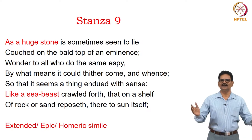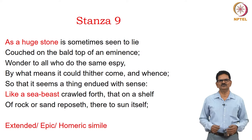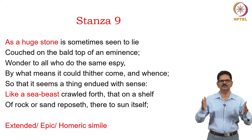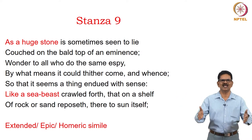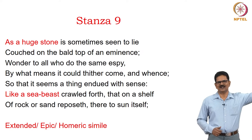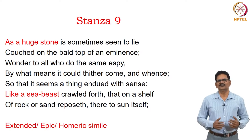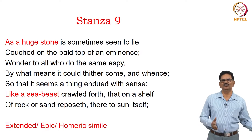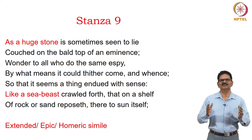Stanza nine presents an epic (extended/Homeric) simile describing the old man: 'As a huge stone is sometimes seen to lie, / Couched on the bald top of an eminence, / Wonder to all who do the same espy / By what means it could thither come and whence, / So that it seems a thing endued with sense, / Like a sea beast crawled forth / That on a shelf of rock or sand reposeth, there to sun itself.' The stone on the hill and the sea beast on the shore are both wonders, just as the old man's presence in that moor is extraordinary.